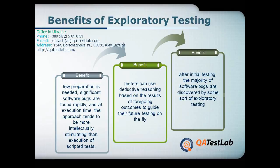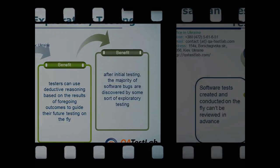Testers can use deductive reasoning based on the results of foregoing outcomes to guide their future testing on the fly. After initial testing, the majority of software bugs are discovered by some sort of exploratory testing.